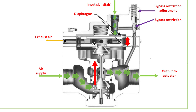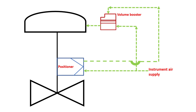We have an input air signal at the top port. This input signal may come from solenoid valves or from positioner output. We also have an air supply input and an output to the actuator. The air supply comes from instrument air, and the other port is the output to the actuator — this is the final volume booster output going into the actuator. We also have a bypass restriction adjustment and an exhaust.